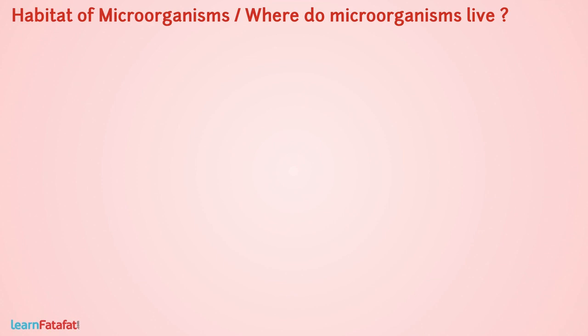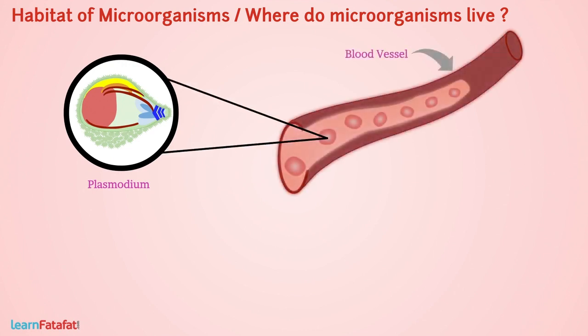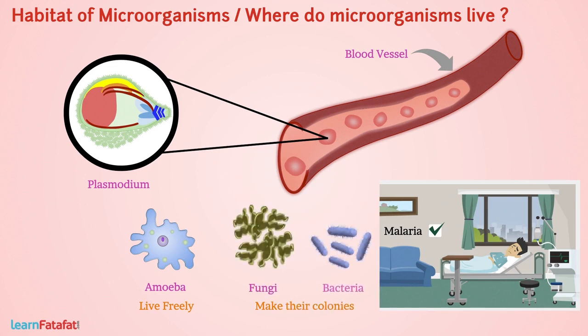Some microorganisms grow on other organisms. For example, plasmodium lives in human blood and causes malaria. Some live freely, such as amoeba, and others make their colonies, such as fungi and bacteria.